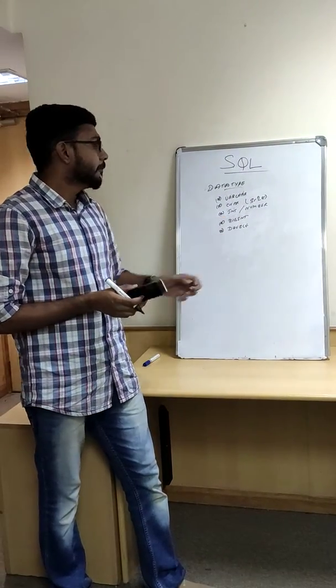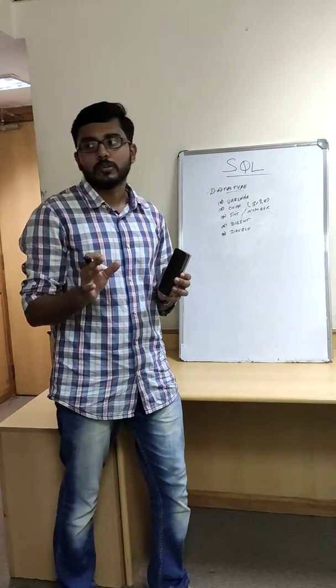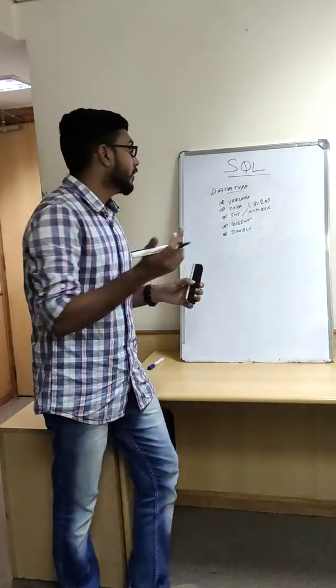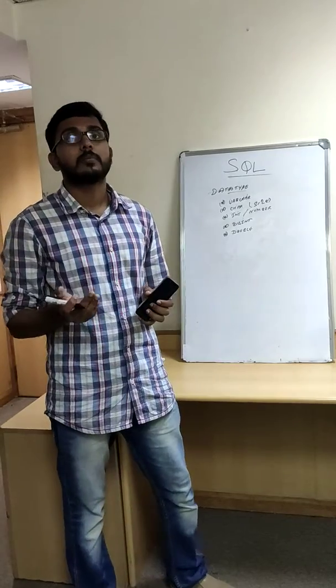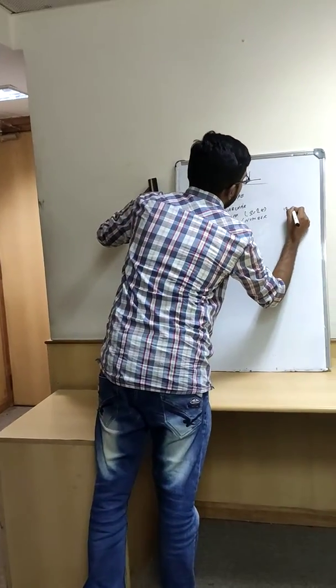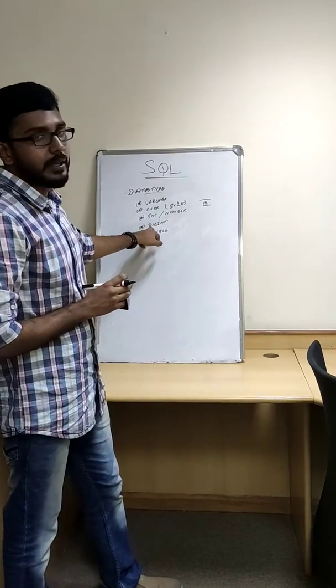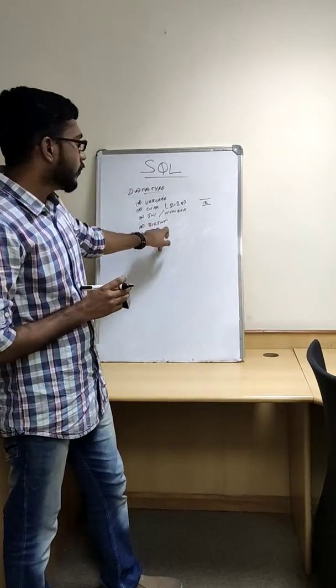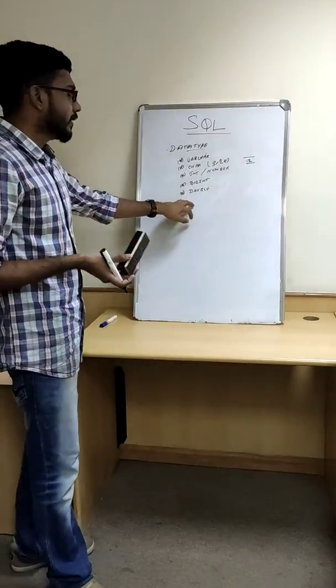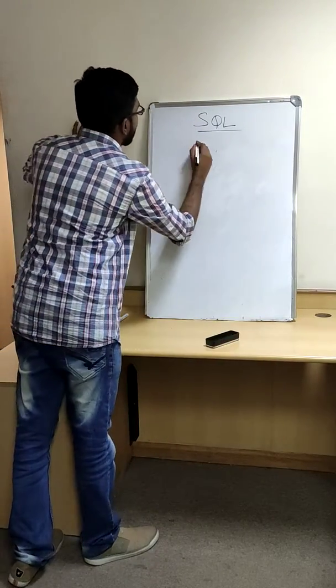Now, bigint are mainly used to indicate long range of integers. Especially if we are filling into the table, for example, mobile number. If you are filling a mobile number into the table, it will contain twelve numbers. So, to point that twelve numbers we are using bigint data type. And, final one is double. Double indicates decimal values or float values. We will use double data type.